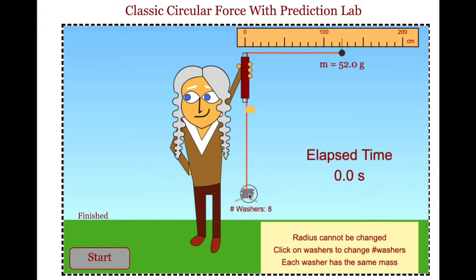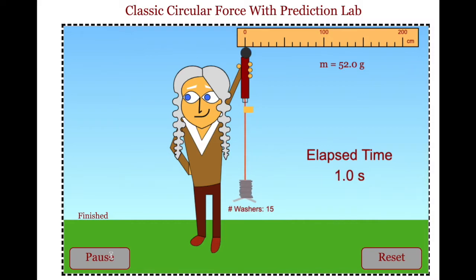They should reset, click on the washers, change the number of washers, and run it again. I would suggest between 5 and 10 different trials.